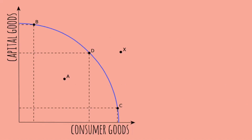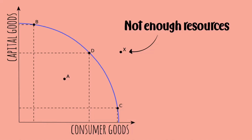Here's what a production possibility curve would look like. Anywhere outside the curve, such as point X, is where there is not enough resources to produce both the consumer goods and the capital goods.